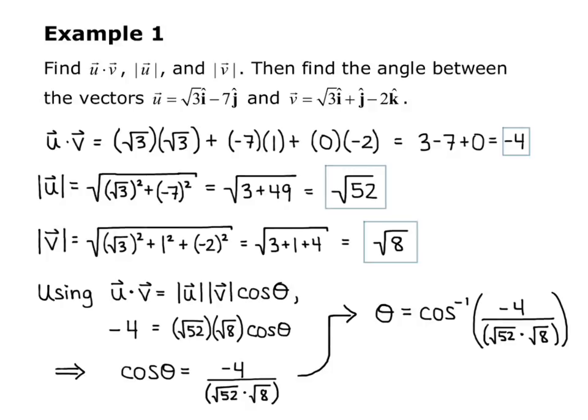Be really careful with how you enter this in your calculator. You want to make sure that you put parentheses around the denominator, so that your calculator knows that both of those square roots are in the denominator. So that gives me 1.8 radians.